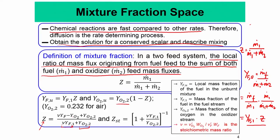The definitions here are: Yfu is the local unburnt fuel mass fraction, Yf1 is the mass fraction of fuel in the fuel stream, YO2,2 is the mass fraction of oxygen in the oxidizer stream, and ν is the stoichiometric mass ratio. ν is defined as ν = (ν'O2 × WO2) / (ν'F × WF), where ν'O2 and ν'F are the stoichiometric coefficients in the reaction ν'F·Fuel + ν'O2·O2 → ν''P·Products. So ν is the stoichiometric mass ratio.